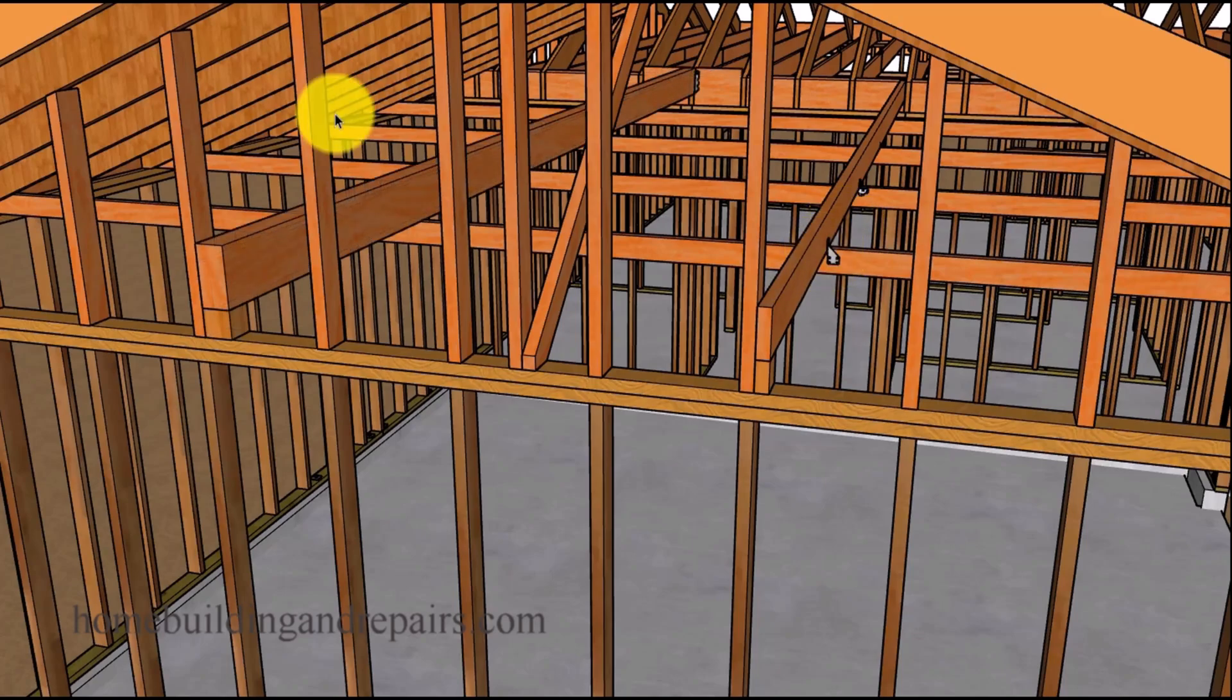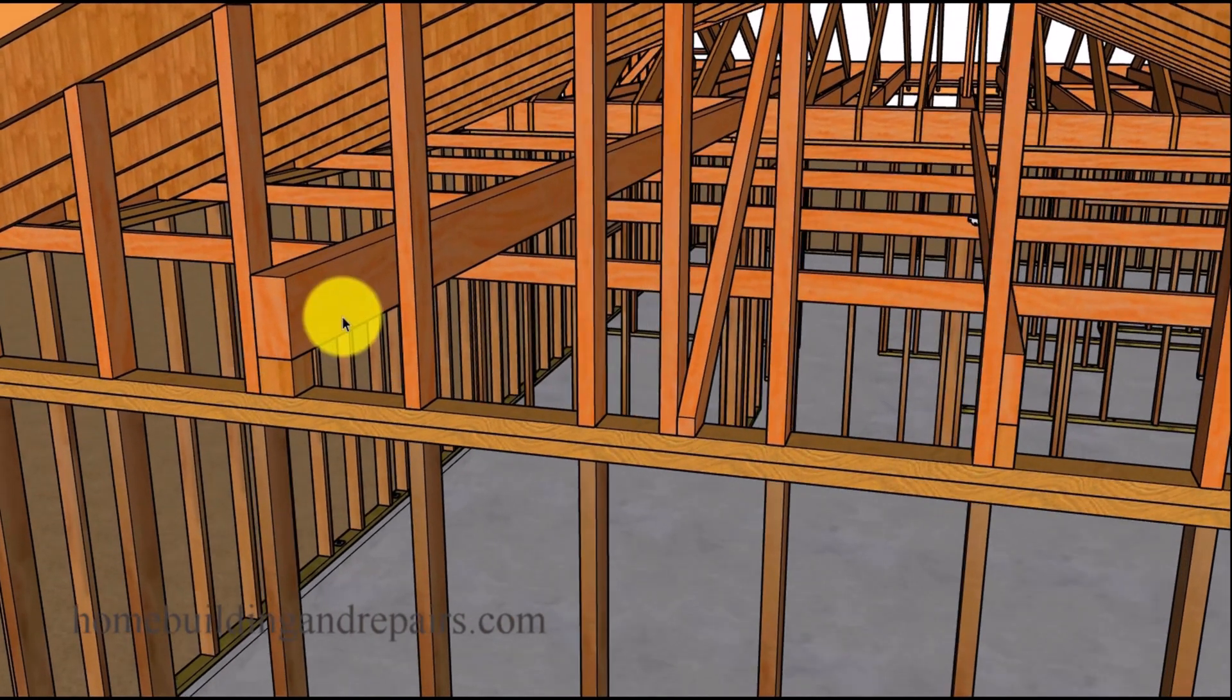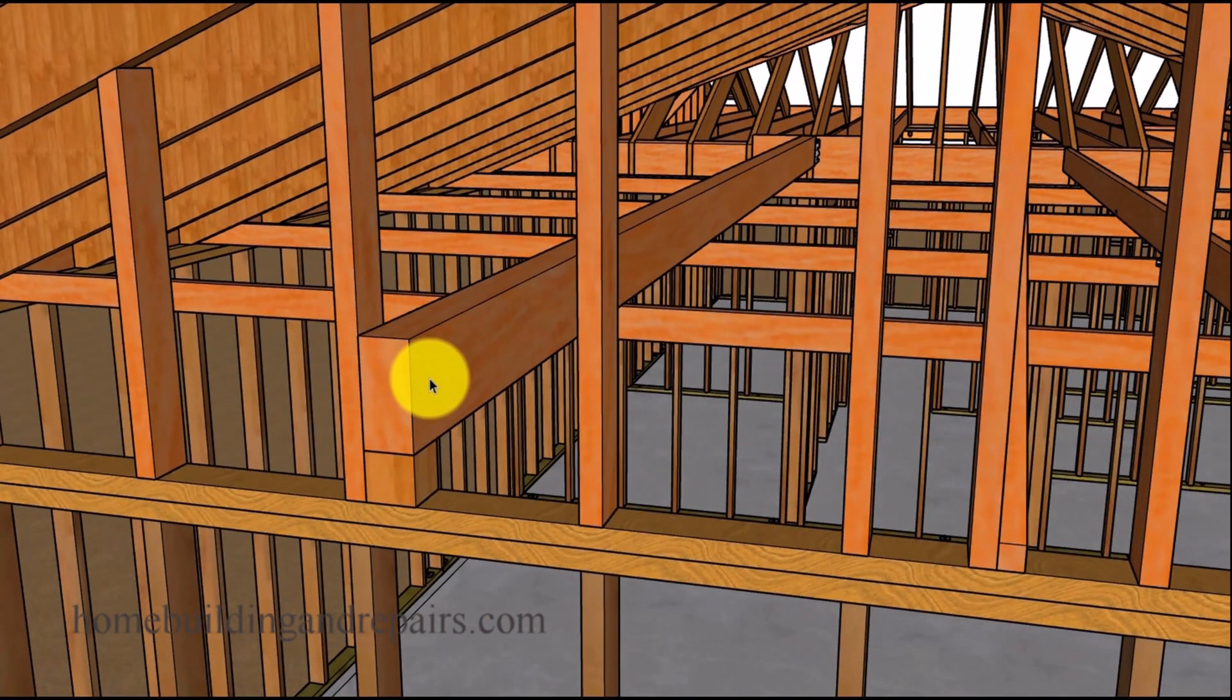Now if you have a big sag in the ceiling, and again this wouldn't be something you would probably need for rafter ties, but if you have ceiling joist then a beam, a larger piece of wood, is probably going to be a little better than a smaller piece of wood.